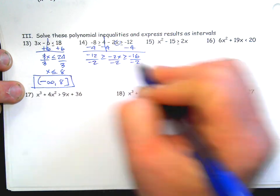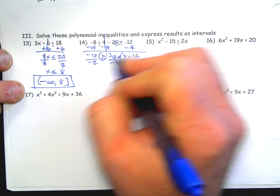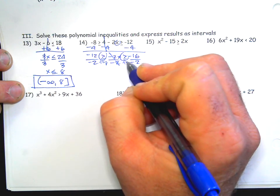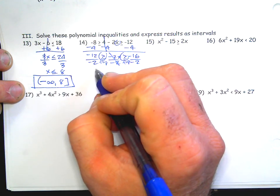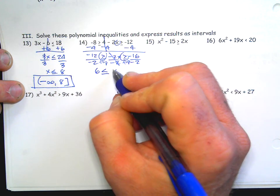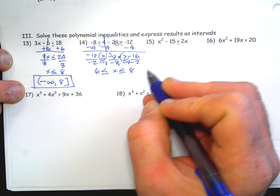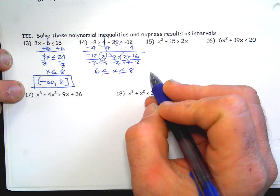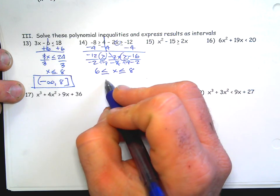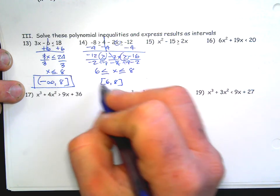Then you're going to divide by negative 2. Remember: when you divide or multiply both sides of an inequality by a negative, you have to flip the inequalities. If you forget to do that, your answer is probably going to look a little weird. We usually like to write it left to right, smallest to biggest. So the interval notation answer is six to eight with a bracket.